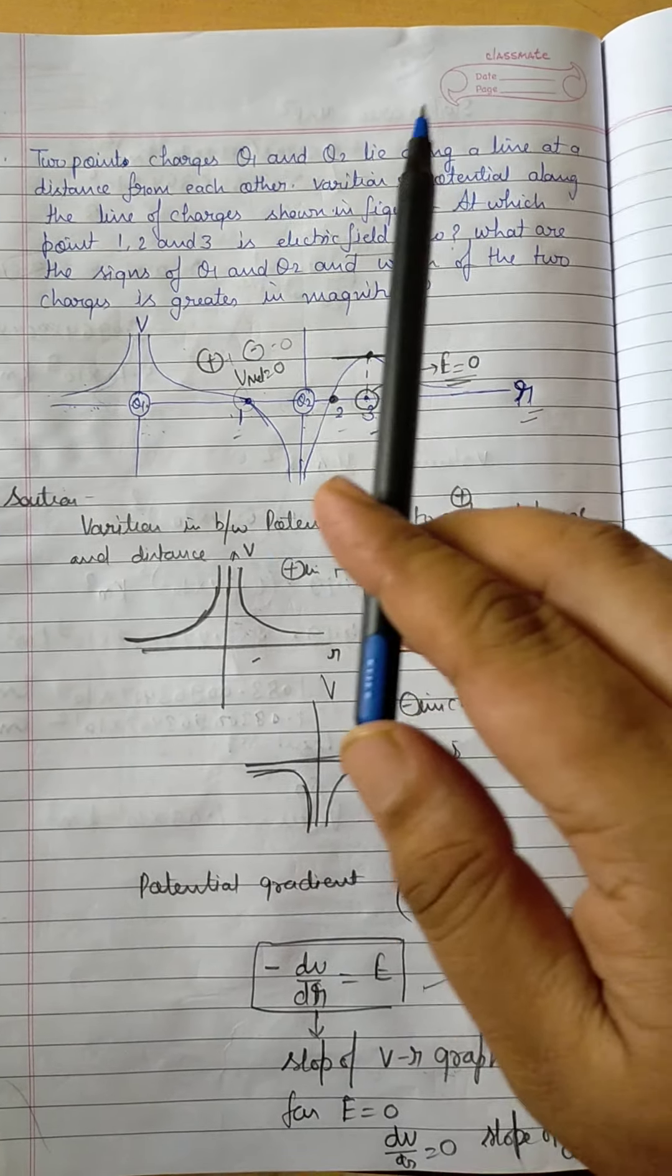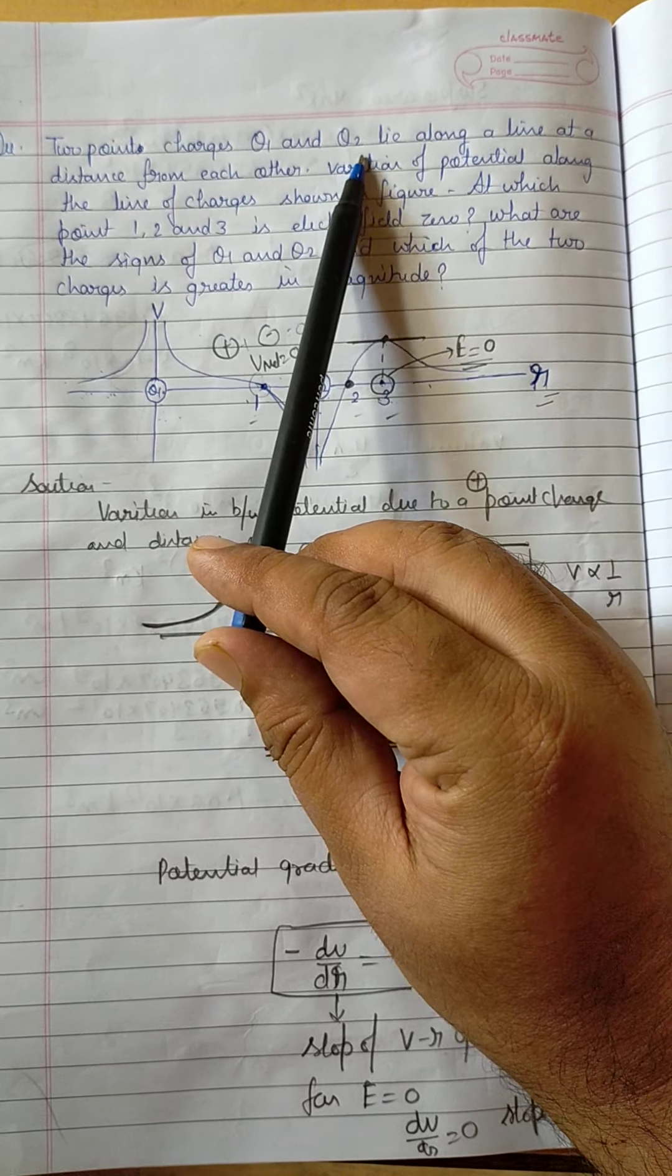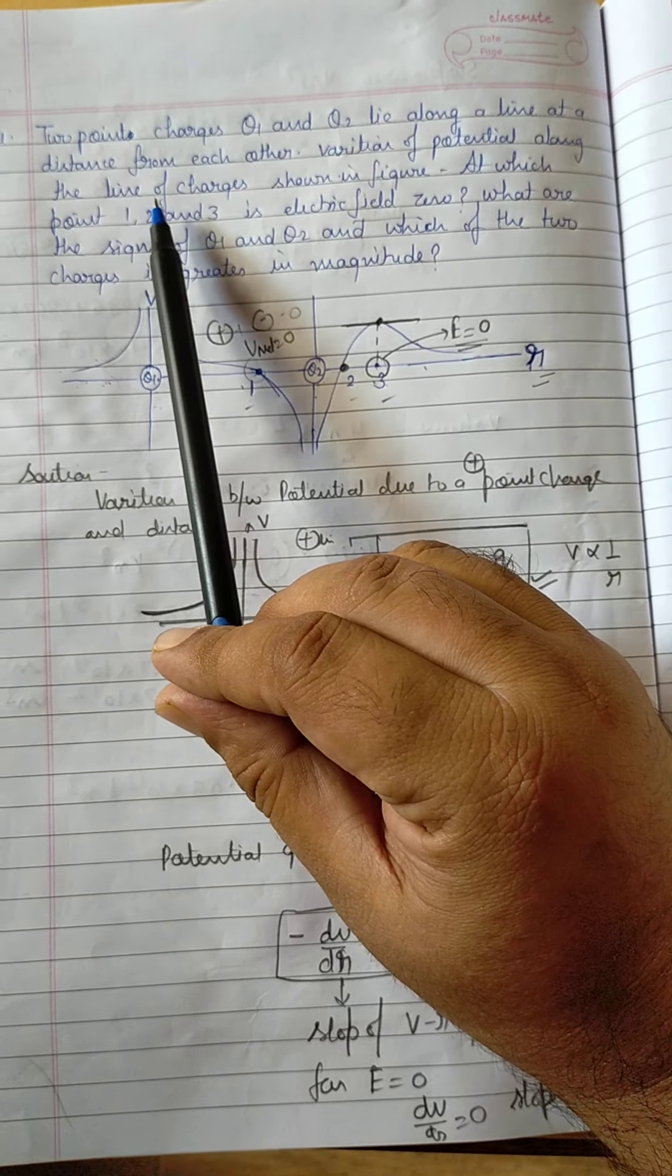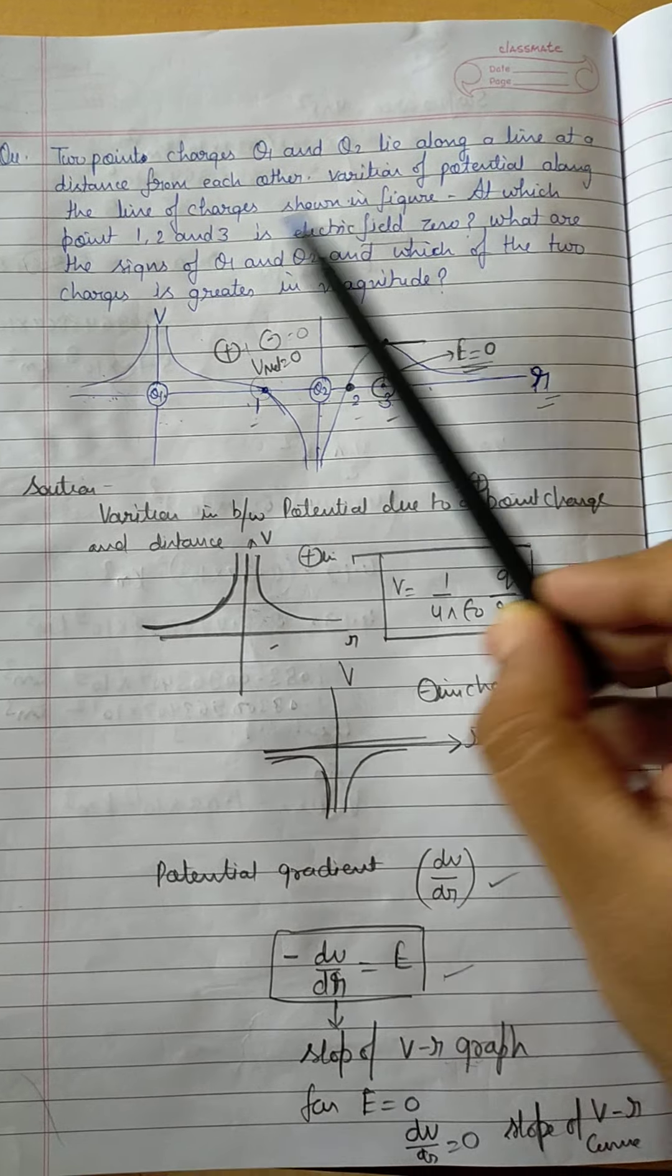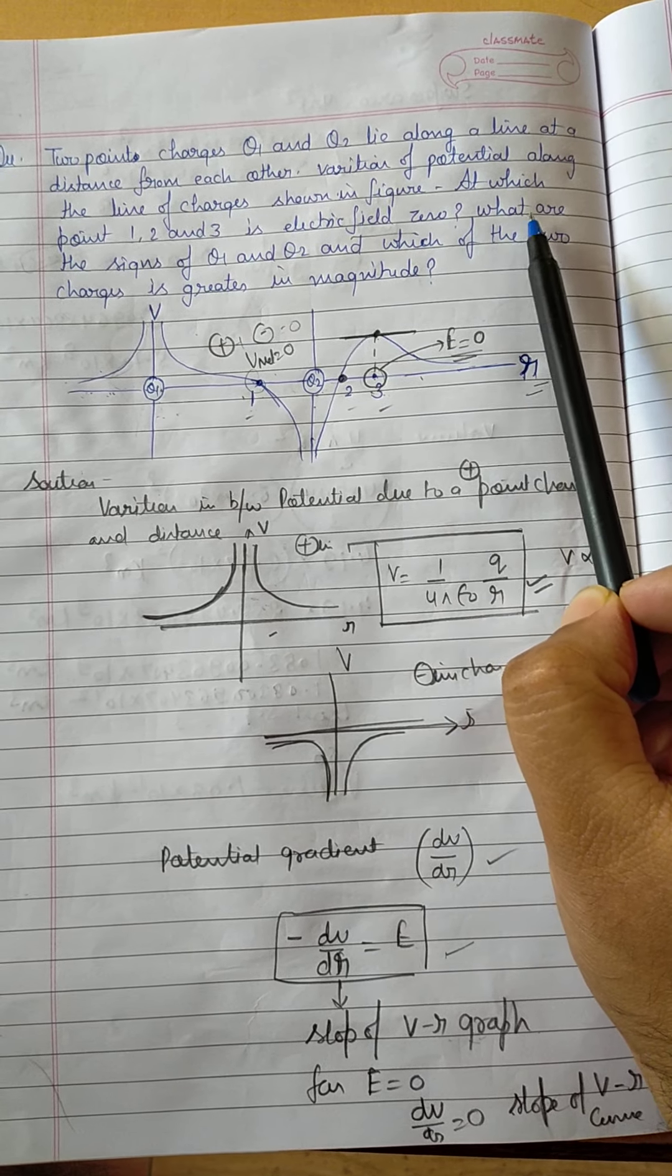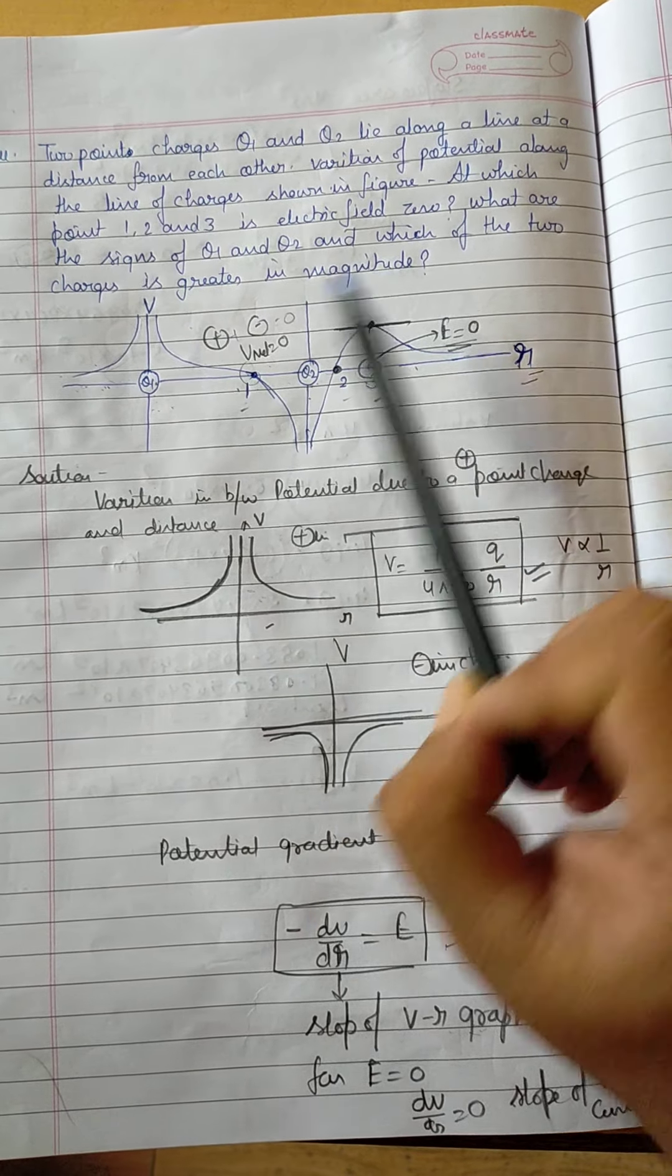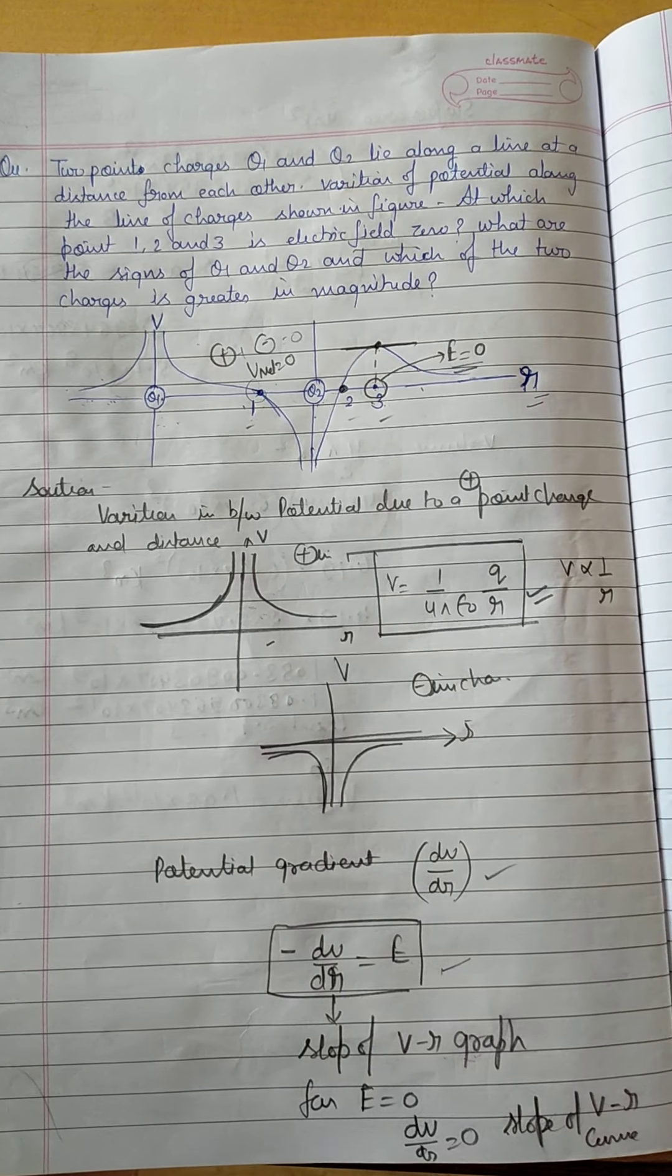So student, today's question is: two point charges q1 and q2 lie along a line at a distance from each other. Variation of potential along the line of charges is shown in this figure. At which point—one, two, and three—is electric field zero? And second part, what are the signs of q1 and q2, and which of the two charges is greater in magnitude? यह आपको graph given था, इस graph के according आपको इस question को solve करना है।